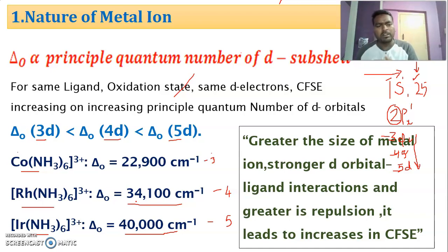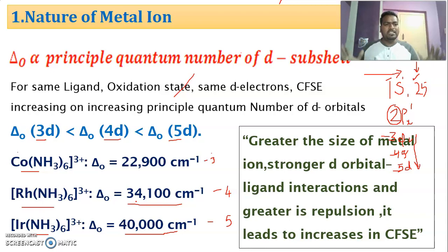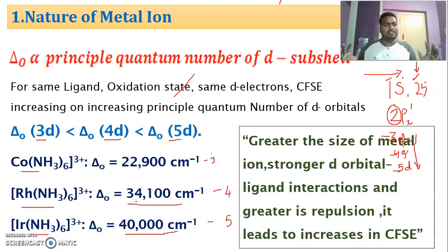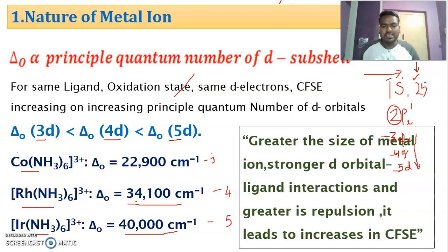In the case of principal quantum number: if the principal quantum number increases, the size of the metal ion increases. If the size of the metal ion increases, it strongly interacts. The one having small size interacts with less force, but the one having large size interacts with more force. As a result, repulsion will be more, and if repulsion increases, it leads to an increase in crystal field stabilization energy.